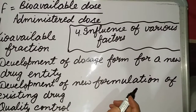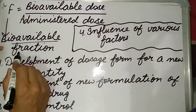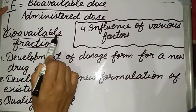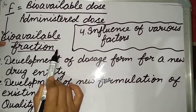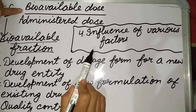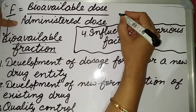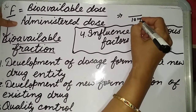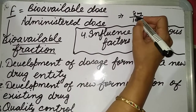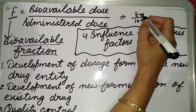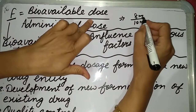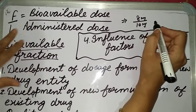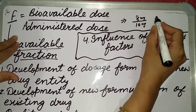What is bioavailable fraction? This term is denoted by F and is known as the bioavailable fraction. It is determined by the bioavailable dose divided by the administered dose. For example, if we give 10 mg of a drug to a patient and 8 mg enters the systemic circulation, then the bioavailable dose is 8 mg and the administered dose is 10 mg. The bioavailable fraction will be 0.8.